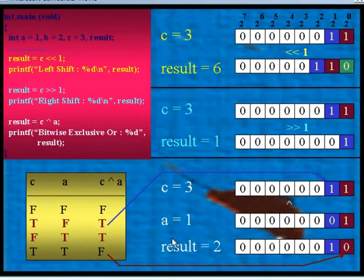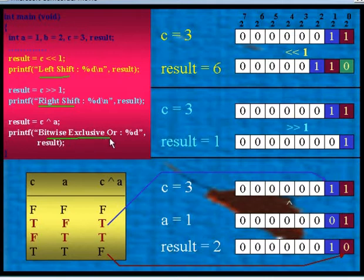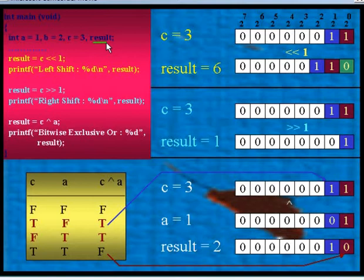Let us study the remaining three operators: left shift, right shift, and bitwise exclusive OR. This is the same program. We have declared A, B, and C as three integer variables, initialized to 1, 2, and 3 respectively. Result is the fourth integer variable. Now let us study the left shift bitwise operator.